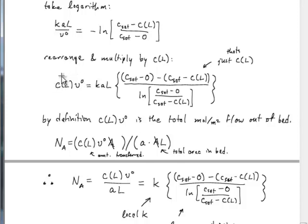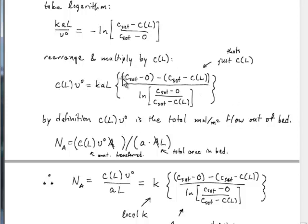What we find is that we can write the velocity times the concentration exiting the bed, which must be related to the flux of benzoic acid into the liquid over the course of the whole bed. This is the benzoic acid leaving the bed — there was no benzoic acid coming in, so this must be the amount that's come into solution due to the dissolution process. Using this result, this quantity must be equal to that quantity. The c_sat's cancel and leave c_L in the numerator of the expression in curly brackets.